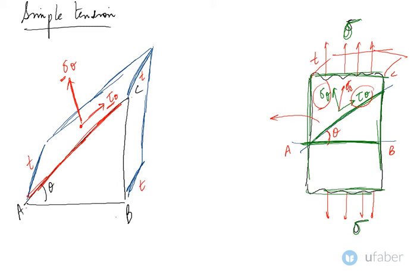What is the force on the body? Force on the body is stress into area. So if I have to find the stress in the perpendicular direction, this would be stress into area. Area is thickness into AC, so this would be AC into t.